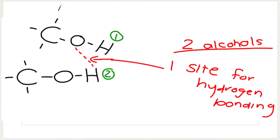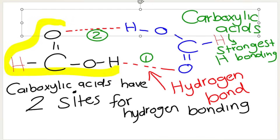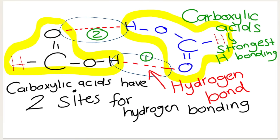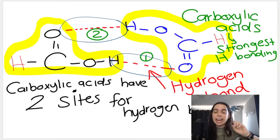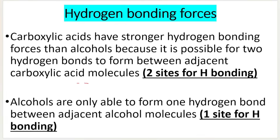Here I have methanol and another methanol — they have one site for hydrogen bonding. Hydrogen bonding can take place in one area between two different alcohol molecules. Whereas carboxylic acids have two sites for hydrogen bonding — this is one carboxylic acid molecule and this is the second, and there are two places where hydrogen bonding can occur. Two sites means carboxylic acids have stronger hydrogen bonding than alcohols.